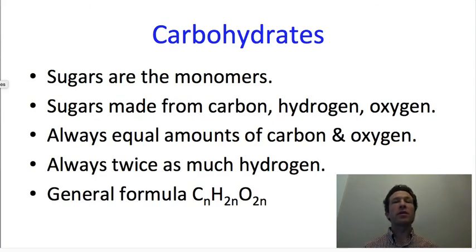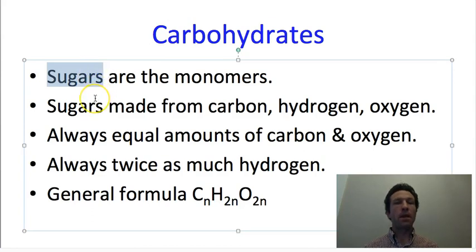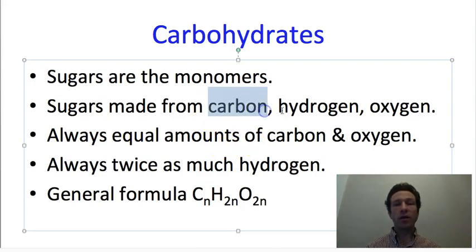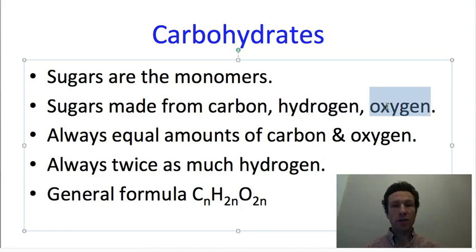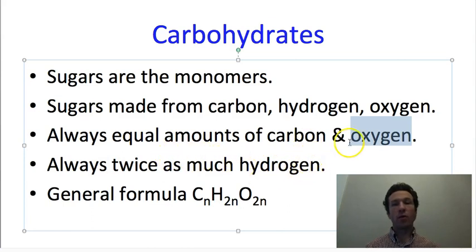Let's transition and talk about carbohydrates, one of our four major groups of macromolecules. The monomers of carbohydrates are sugars, and sugars are always made from exactly three elements: carbon, hydrogen, and oxygen. Not only are carbohydrates always made from these three elements, they're always made with the same ratios — every carbohydrate has the same amount of carbon as oxygen, and there's always twice as much hydrogen as carbon or oxygen. That means we can write a general formula for any carbohydrate.